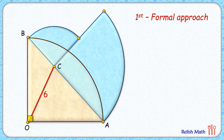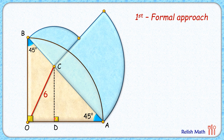Let's check the first approach. With respect to the brown quadrant, OA and OB are the radii, and thus triangle BOA is a right angle isosceles triangle. Angle A will be 45 degrees and angle B will be 45 degrees. From point C, let's drop a perpendicular on OA and call this length as 'a' centimeters.